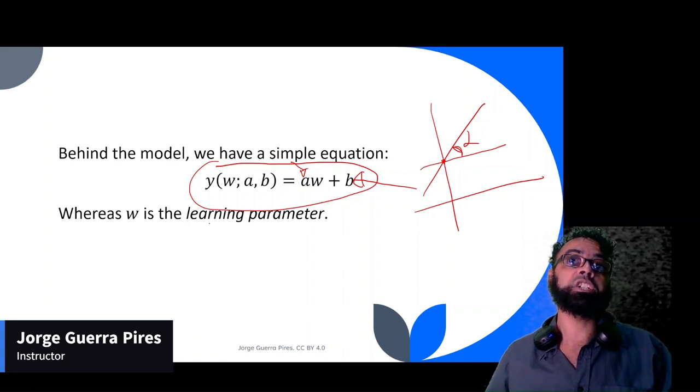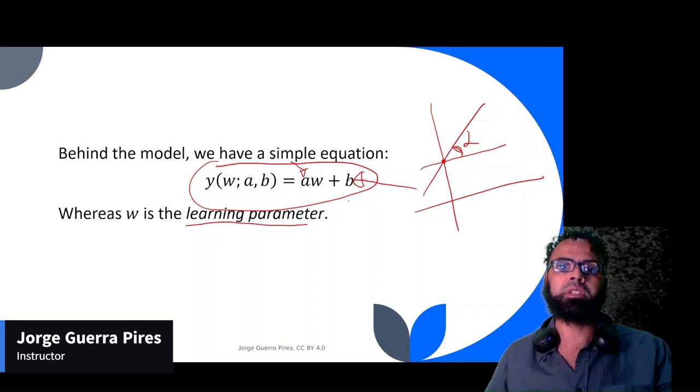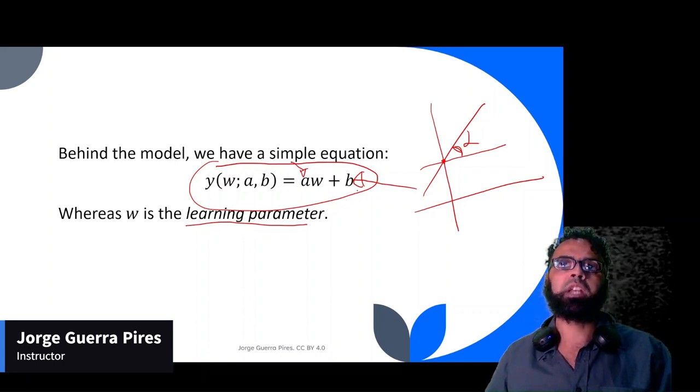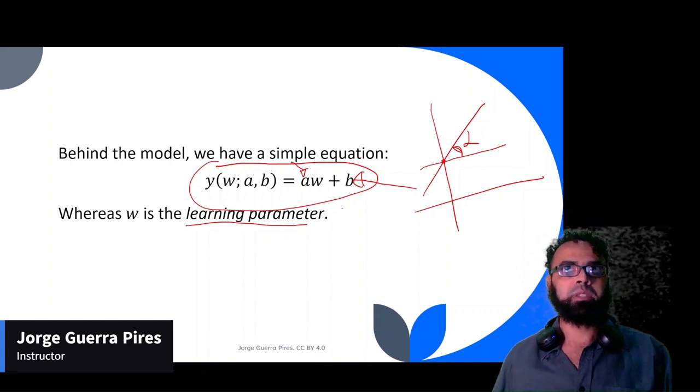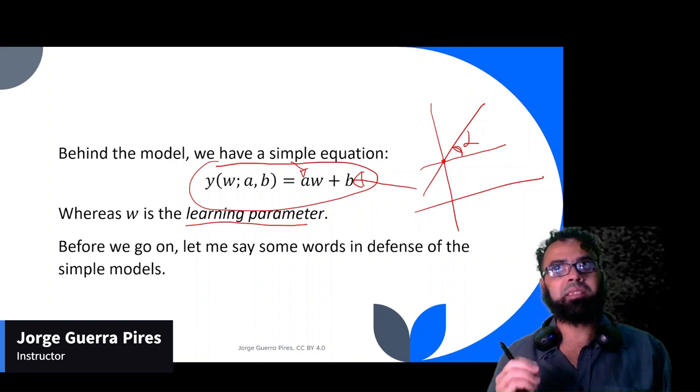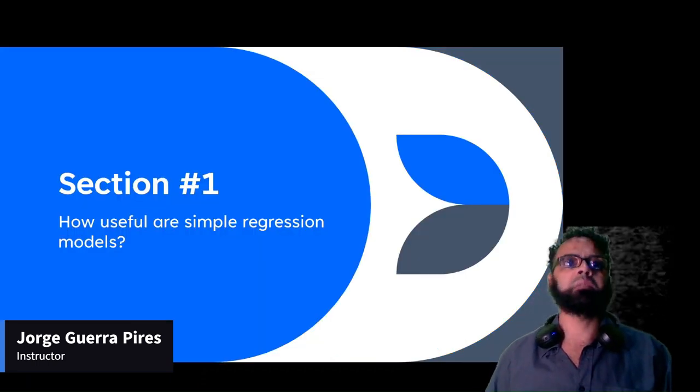Here they're called learning parameters. In straight line regression they're called alpha and intersection, but here they're called learning parameters, which is a different type of notation. Before I go on, let me say some words in defense of simple models. How useful are simple models?